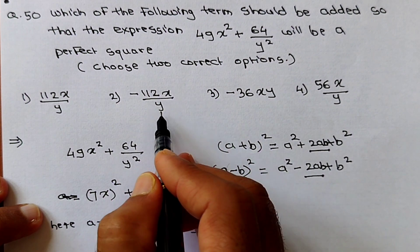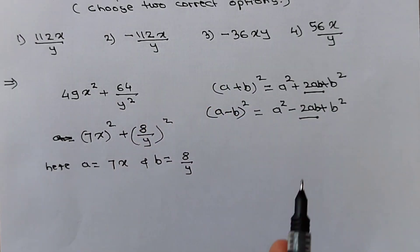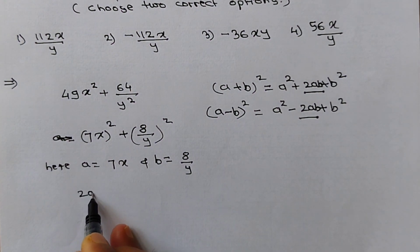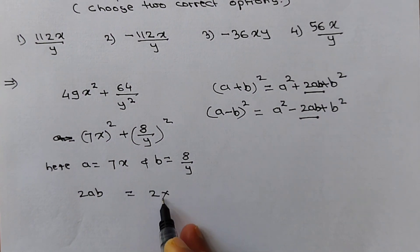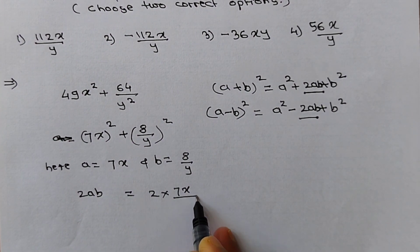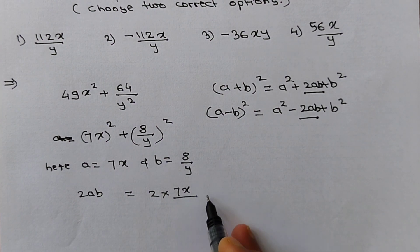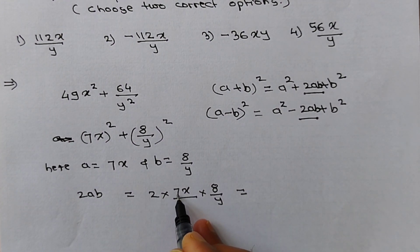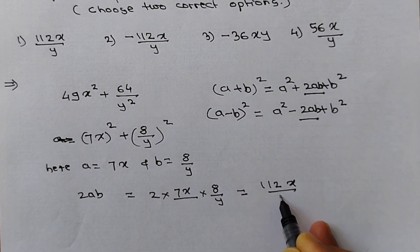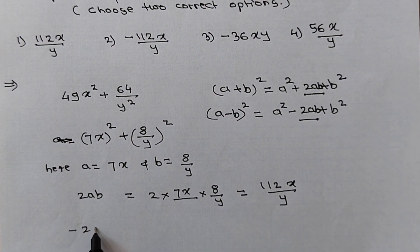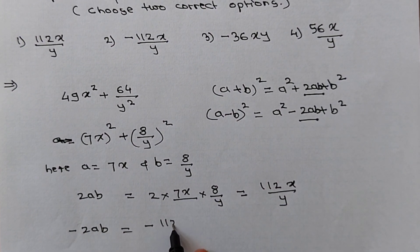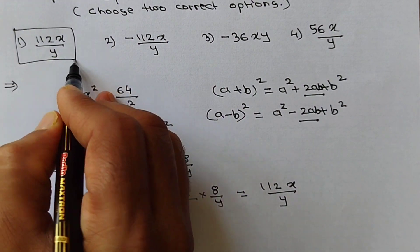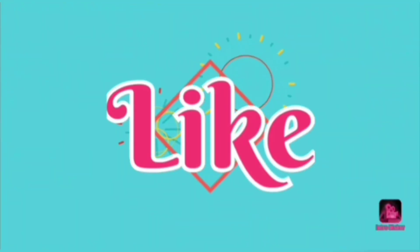Let's confirm: 2ab = 2 × 7x × 8y = 112xy. So we got one term as +112xy and similarly −2ab = −112xy. Our answer must be the first choice and the second option. This is all for this video. Thank you.